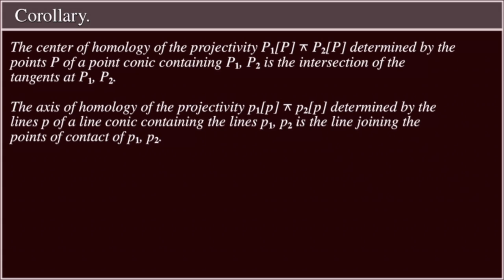Corollary: The center of homology of projectivity P₁ pencil P projective with P₂ pencil P, determined by the points P of a point conic containing P₁, P₂, is the intersection of the tangents at P₁, P₂.